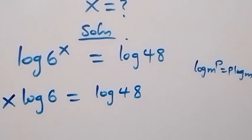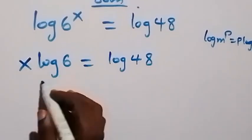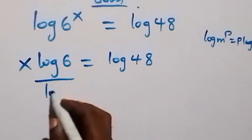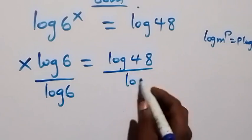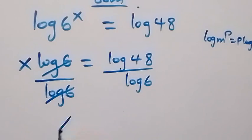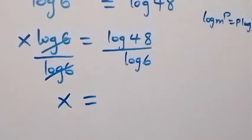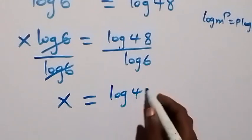Then next from here we can divide both sides by log 6. So log 6 will cancel out and we have x now equals log 48 over log 6.